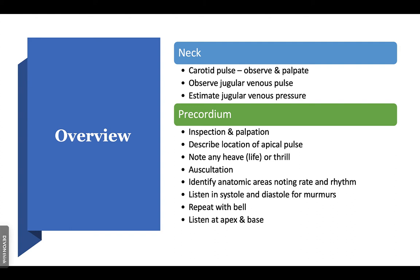For auscultation, we'll talk about the different parts. There's a lot of material in this PowerPoint, but you don't need to know all of it — it's listed on the course if you want to do a deep dive. We're just going to hit the highlights, skipping a number of slides to focus on the most important things. We're going to go through murmurs briefly and then talk about the apex and the base of the heart.